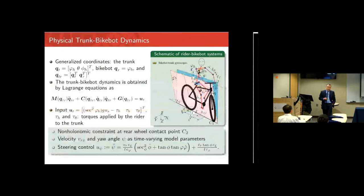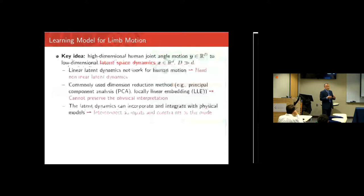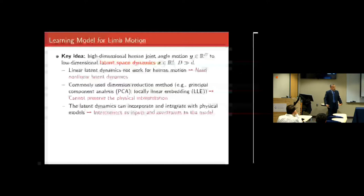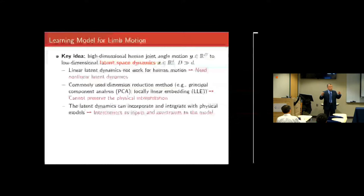For the data-driven approach, you define the latent space with small dimension d, much less than the capital D of the joint space dimension — which includes all the joint angles. The upper limbs probably have at least five degrees of freedom each, giving ten for the arms, plus lower limbs and trunk. There are various dimension reduction methods including PCA and LLE. However, one disadvantage is that we cannot preserve physical interpretation when we reduce from the higher-dimensional joint space to the latent space.